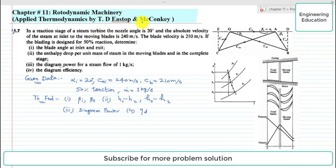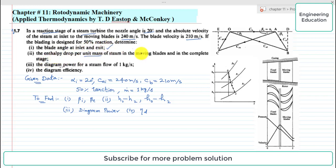The book is Applied Thermodynamics by T.D. Eastop and McConkey. The problem statement: in a reaction stage of a steam turbine, the nozzle angle is 20 degrees and the absolute velocity of steam at inlet to the moving blades is 240 m/s. The blade velocity is 210 m/s. The blading is designed for 50% reaction. Determine the blade angle at inlet and exit, the enthalpy drop per unit mass of steam in the moving blades and in the complete stage, the diagram power for a steam flow of 1 kg/s, and the diagram efficiency.